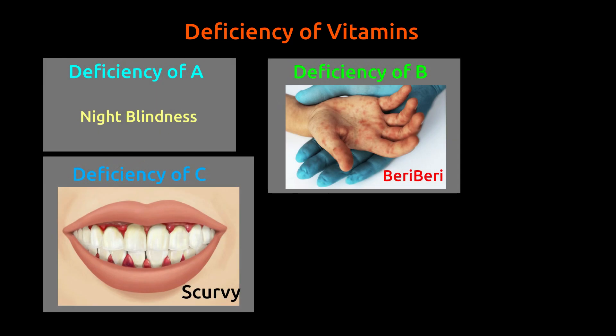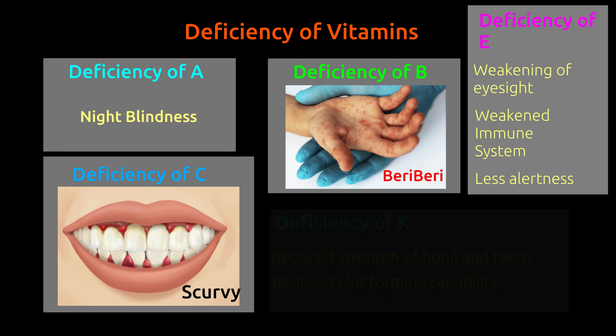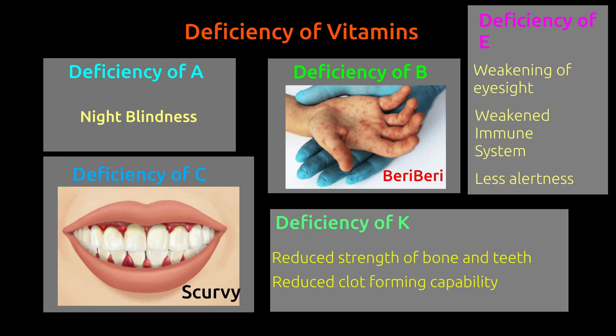Vitamin E deficiency causes weakening of eyesight and the immune system, and it also reduces alertness. Deficiency of vitamin K leads to weakness of bones and teeth, and it also reduces the clot-forming capability of blood.